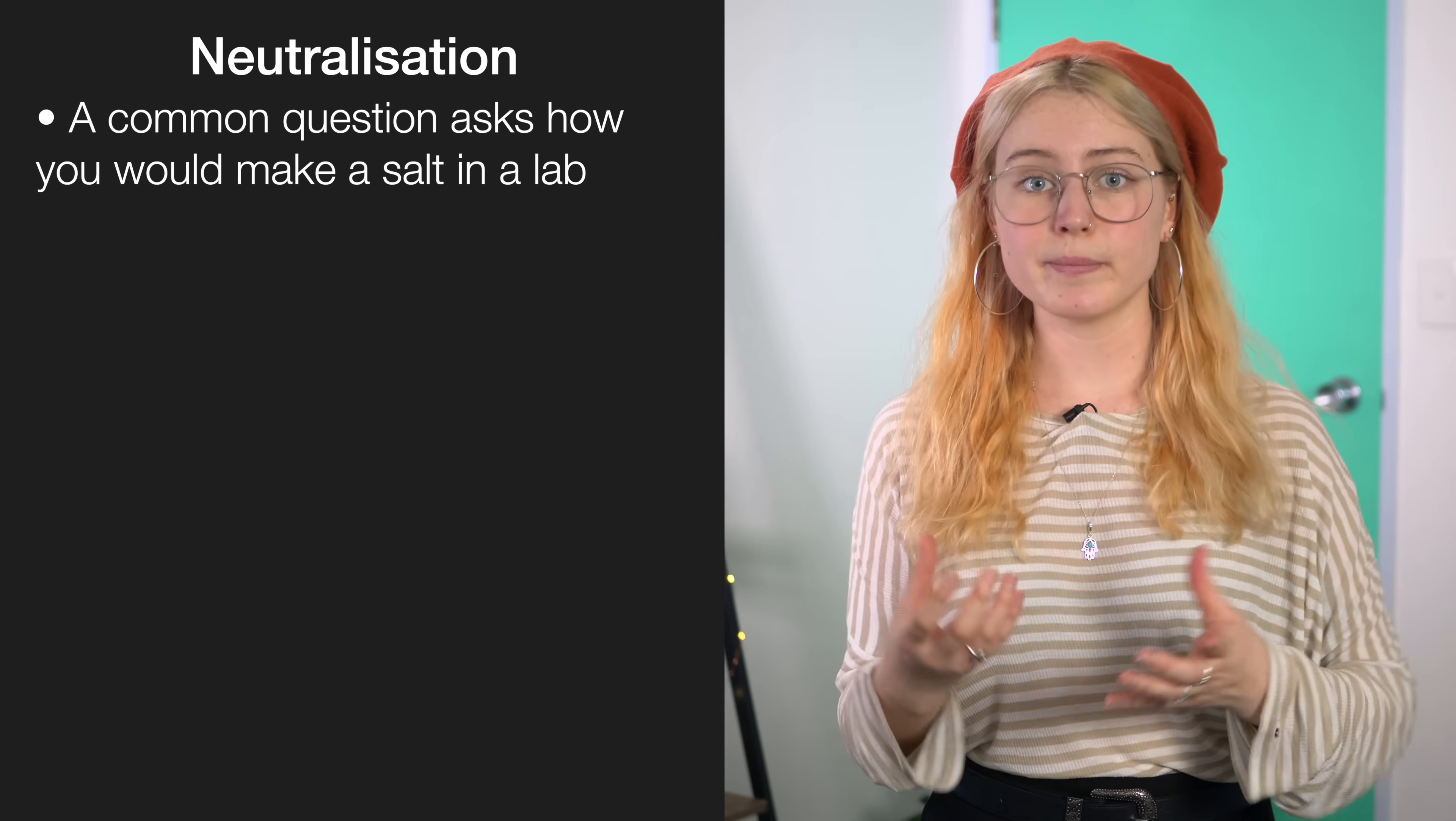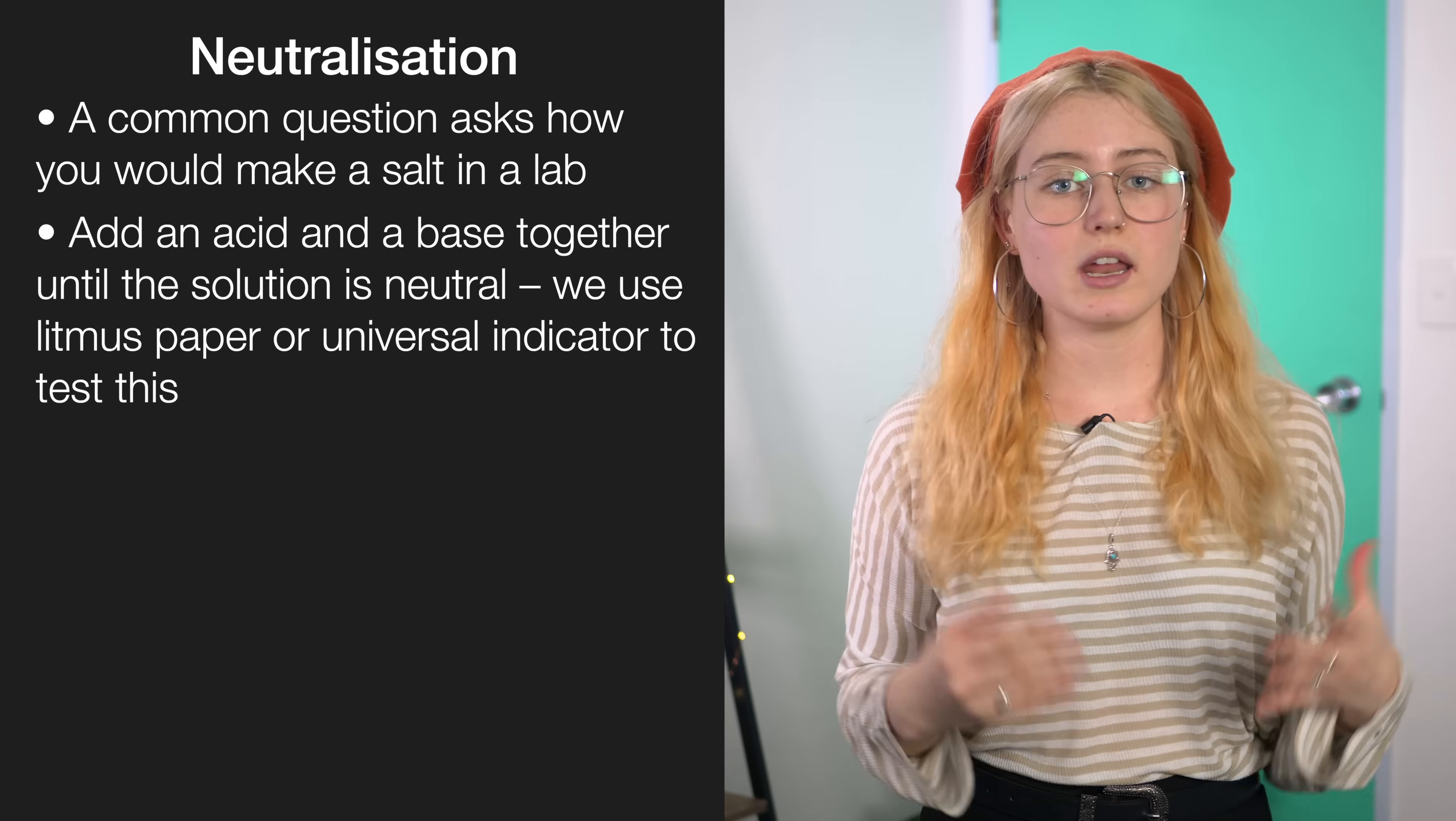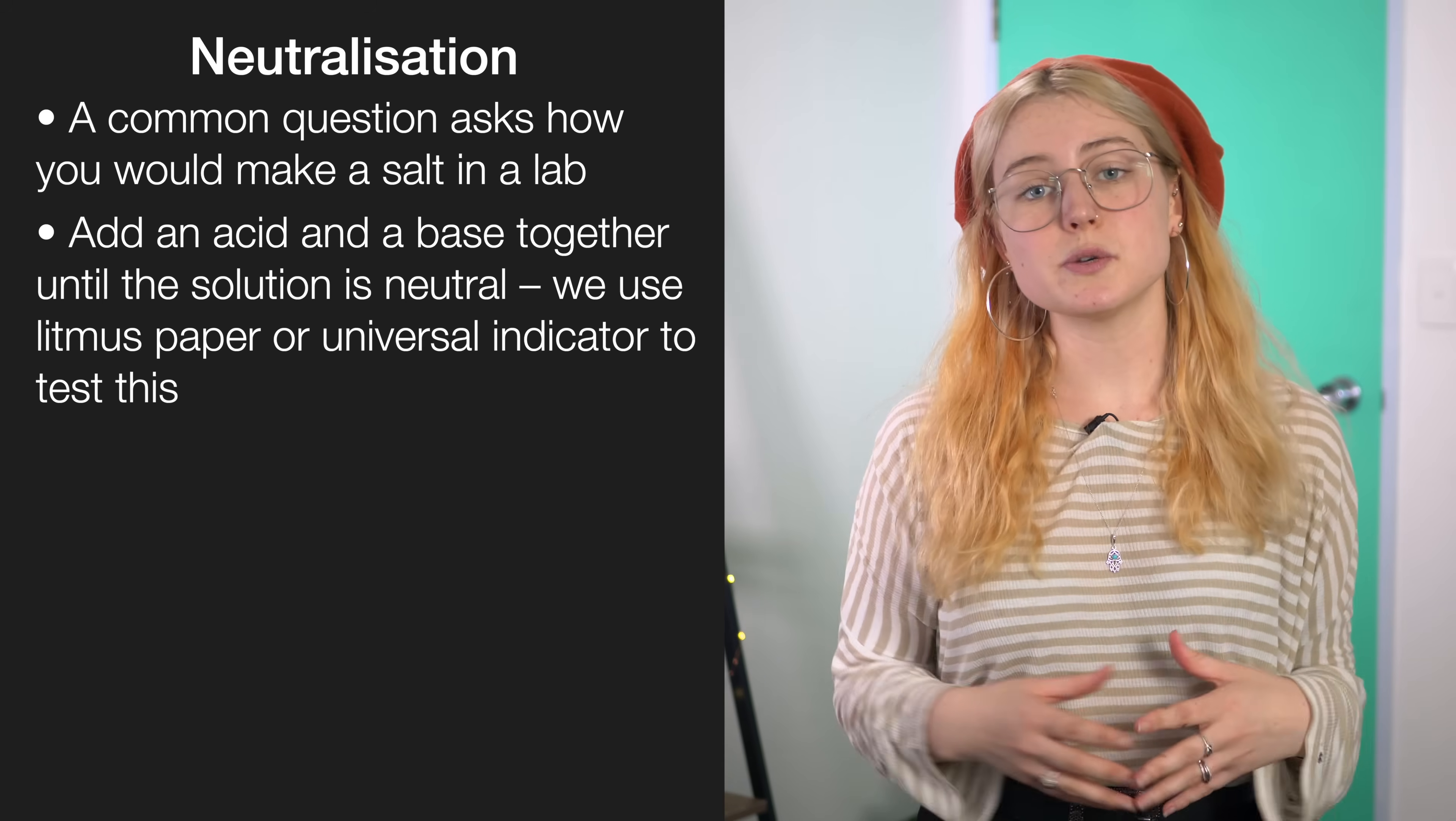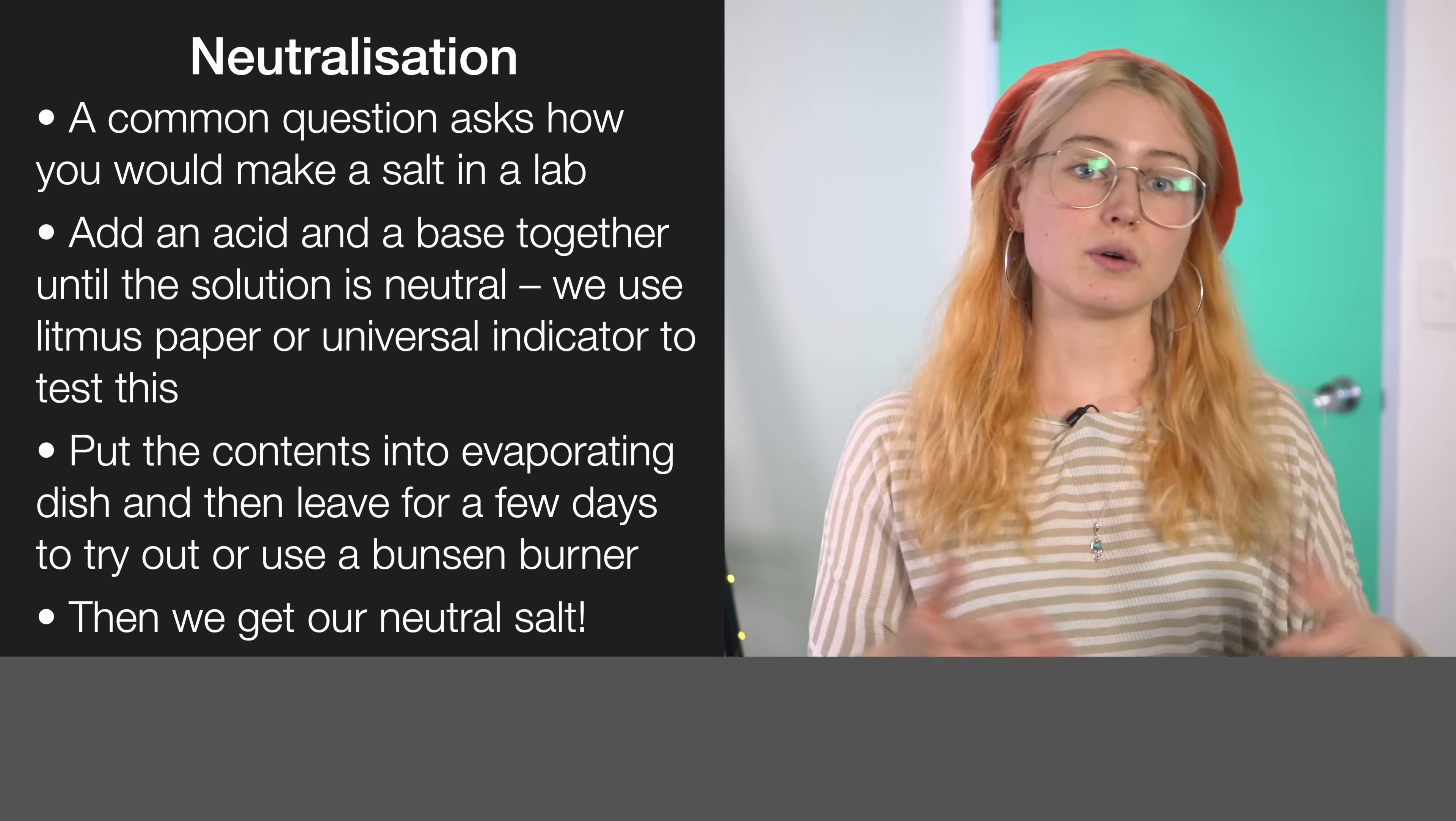So another variation of a neutralization style question is how to produce a salt in a lab. Luckily, the way to do this is pretty simple. So what we do is we add our acid and our base together until we reach a neutral state, and we test this using either universal indicator or litmus paper. Next, what we do is we put our contents into an evaporating dish which we can leave for a couple days to fully dry out, or we can use a Bunsen burner to dry it out a bit quicker. And what happens after this is we get our neutral salt.